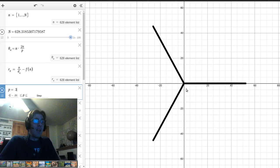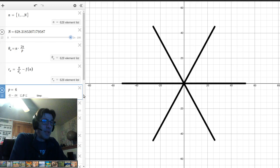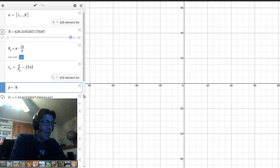Well, you get three spokes, right? If I make P six, you're going to get six spokes. If I get nine.